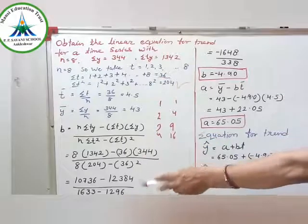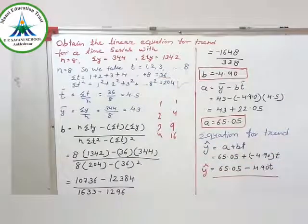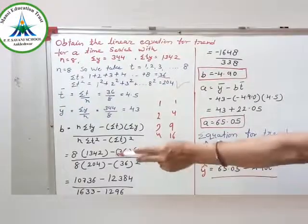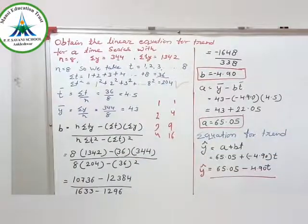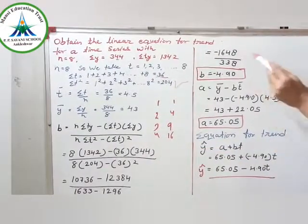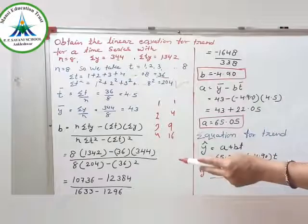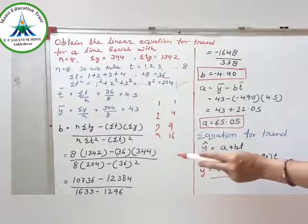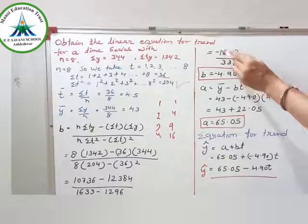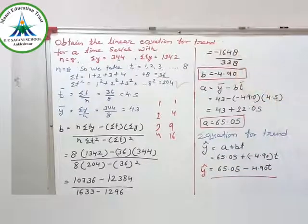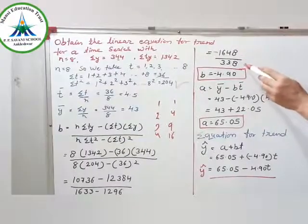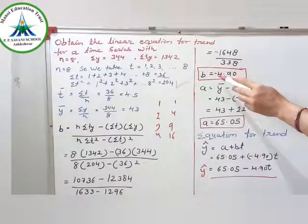Minus sigma t is 36 whole square. Now what do we do? This multiplication. We do this, the answer is 10736 minus 12384. Upon 204 into 8, so 1633 minus 36 square is 1296. Now look, 10736 minus 12384 gives us minus 1648 upon 336. So b equal to minus 4.90.